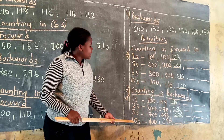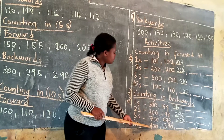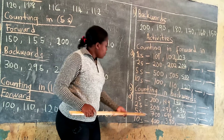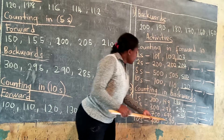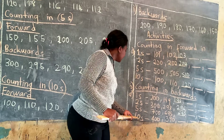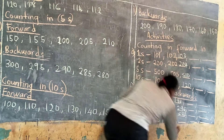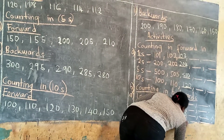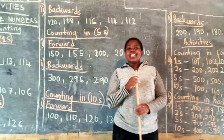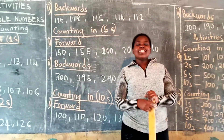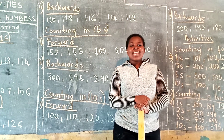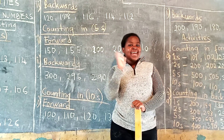Now we are in tens. You subtract 10. Starting at 400, subtract 10, you'll get 390. Then 390 subtract 10, you'll get 380. I hope you have understood from there. I wish you all the best. The next lesson, we are going to be taking on place value. Have a nice day, bye.